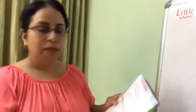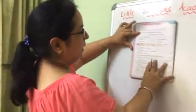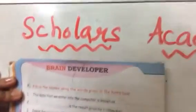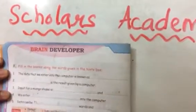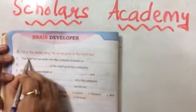Okay, so let's start. Page number 24 has our question answers which we will do today. First question: fill in the blanks using the words given in the hints box. The answers are given in the box and we have to fill them in the blanks. Alright, let's start.